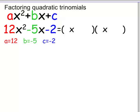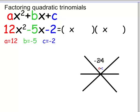Next is to prepare a very convenient device which I call the snowflake. Here is a snowflake which is going to help us organize our work. On this spot goes a times c. So a is 12, c is negative 2, so negative 24 goes on this spot. On this spot right below simply goes the b coefficient. b is negative 5, and negative 5 is right here.